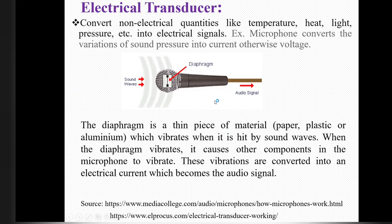An example here is the microphone. This microphone converts variation of sound pressure into current. See in this image, the microphone is shown with its diaphragm — a thin piece of material made of paper, plastic, or aluminum.